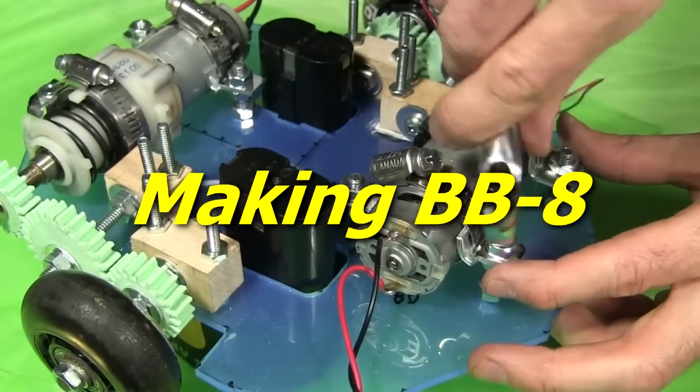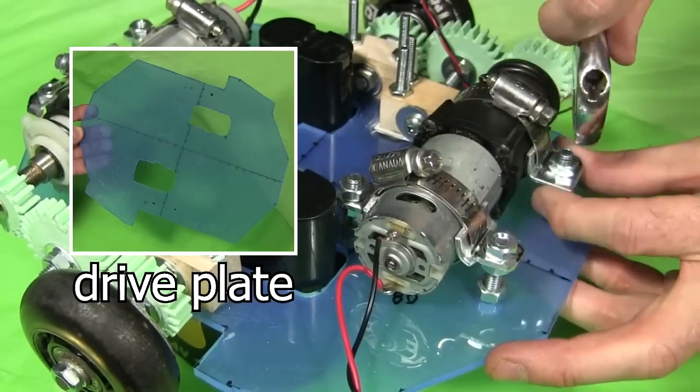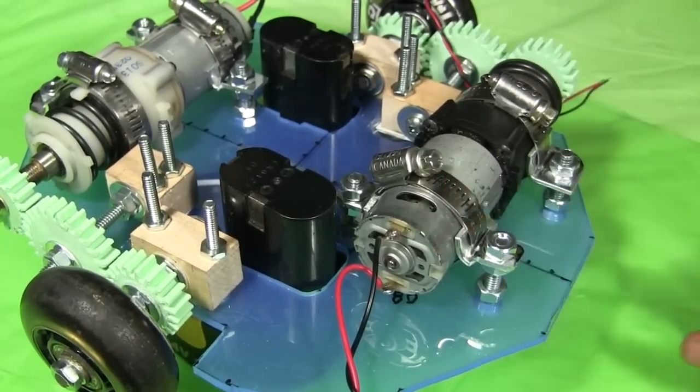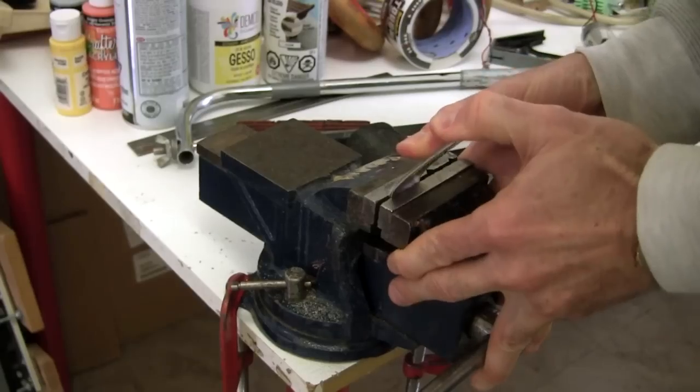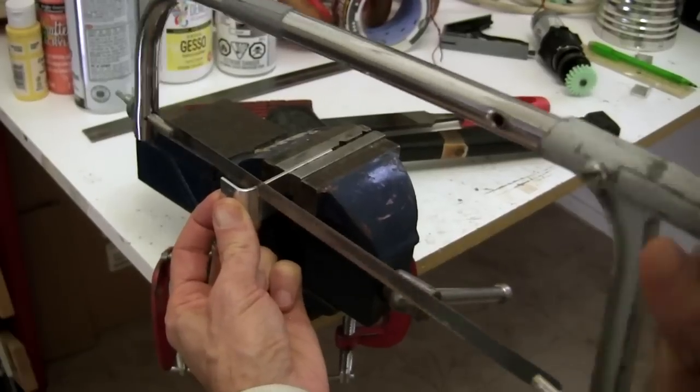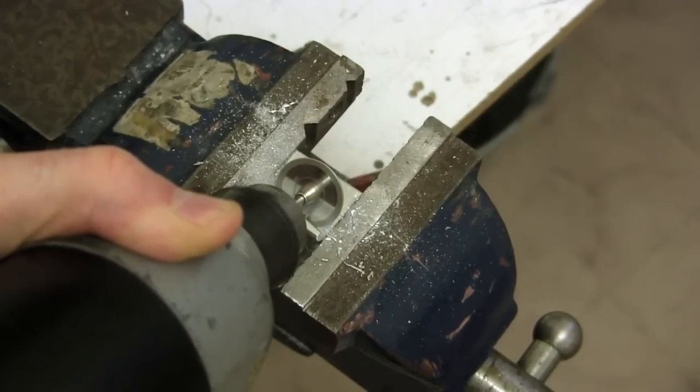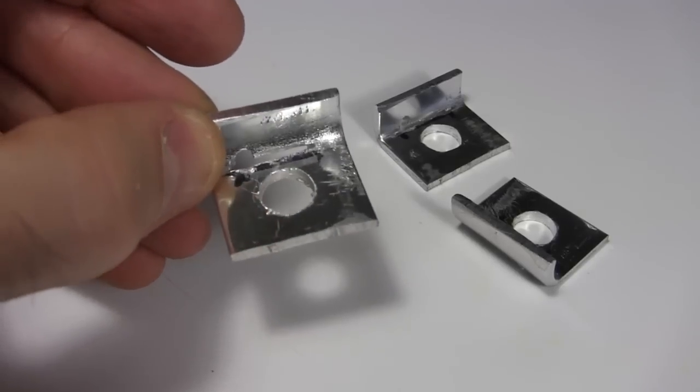And now for the actual making of the BB-8. I'm calling the blue plate that all the driving stuff is mounted on the drive plate. To attach the motors to the drive plate, I wanted something strong that wouldn't take much room. I settled on using hose clamps and metal brackets. To make the brackets, I bend some aluminum bar and cut it. I make a slot for the hose clamp using a cutting blade normally used with a Dremel. I finish it with a 3/8 inch hole. The result are these L-shaped pieces.